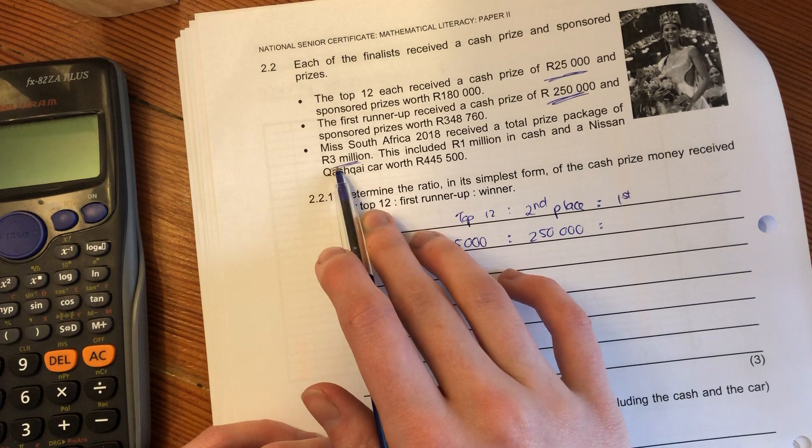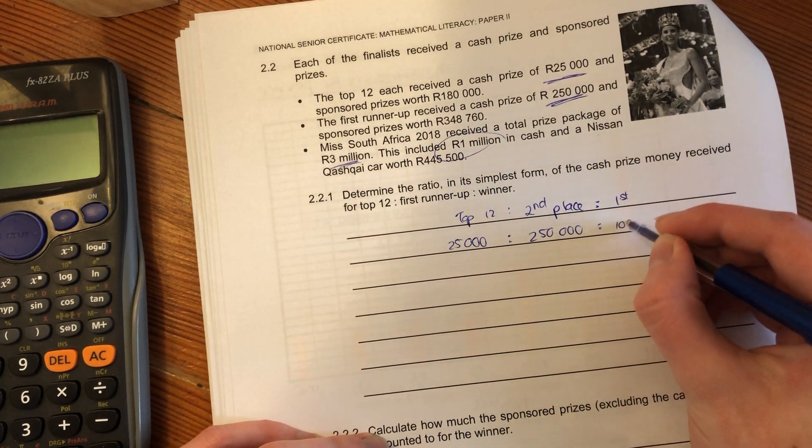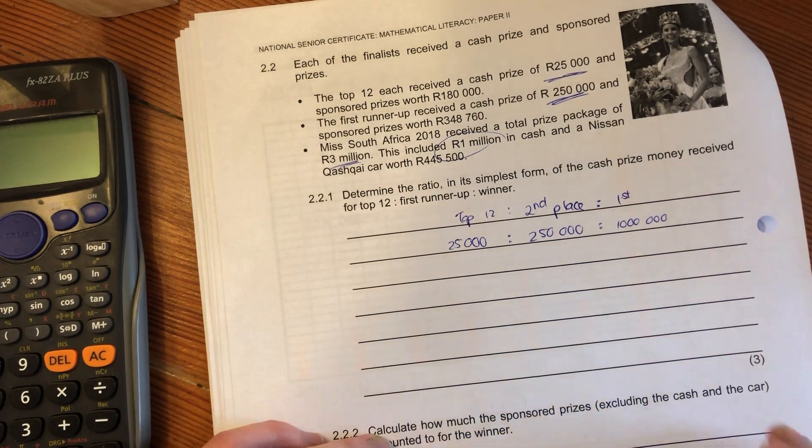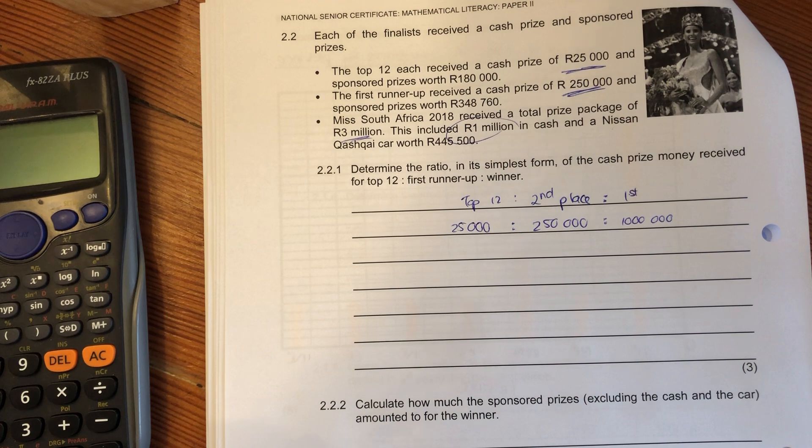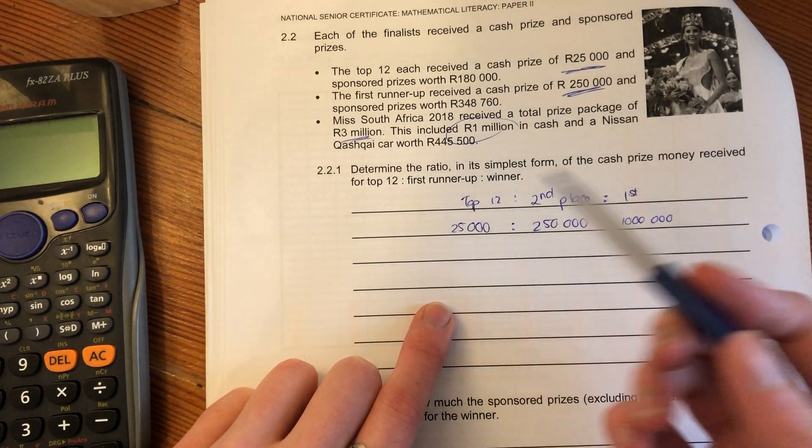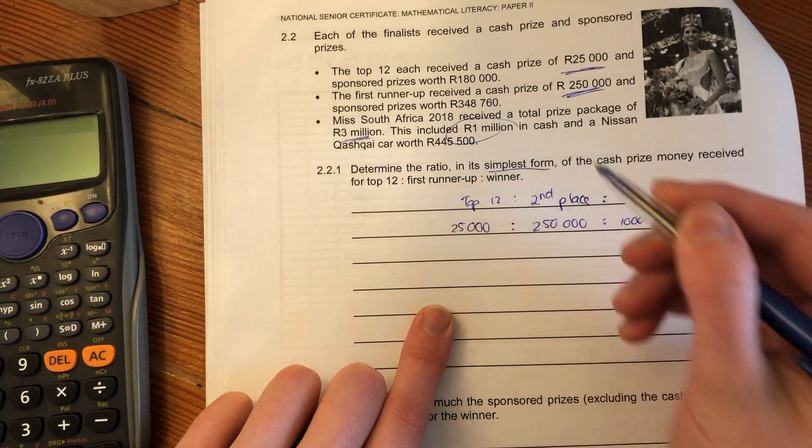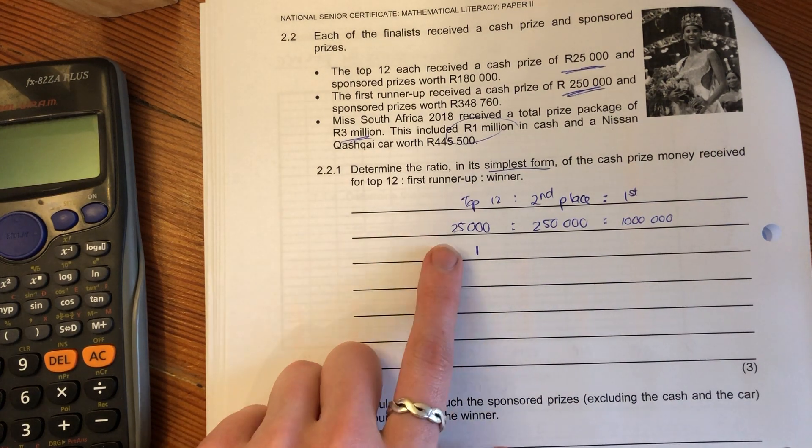Wait, she got three million in total but it was only one million cash. It's very important to read the question, otherwise you're making up your own question. That's how much in cash. Just remember how to write a million: six zeros. Let's simplify it to simplest form, which means this one has to equal one.